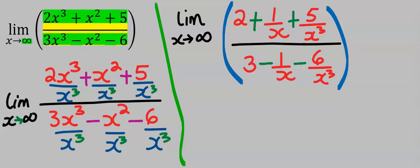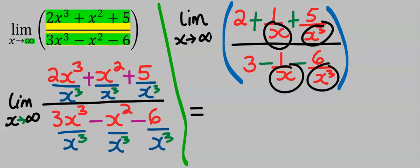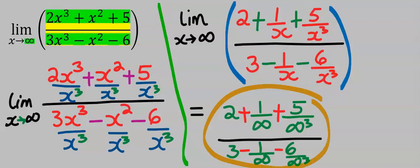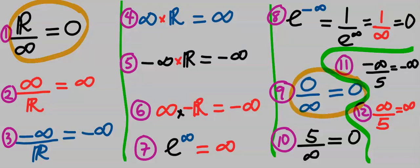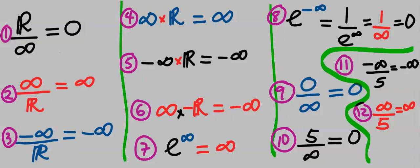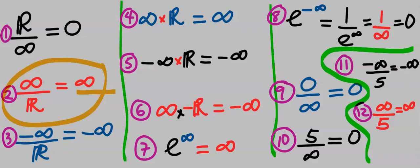Next, take the limit of the remaining function — whenever you see x, put infinity. To recap this concept: any number divided by infinity is zero. For example, 0 ÷ ∞ = 0, and 5 ÷ ∞ = 0. Likewise, since infinity is a very large number, ∞ divided by any number reduces to infinity. The same applies when infinity is negative — it reduces to minus infinity.